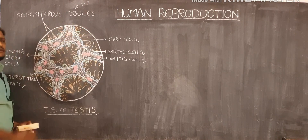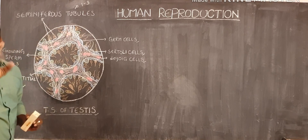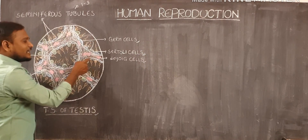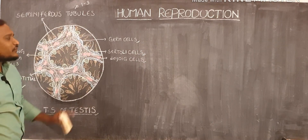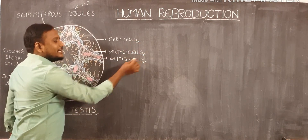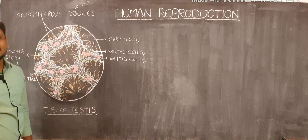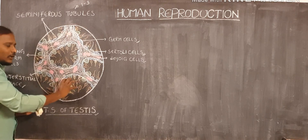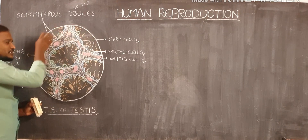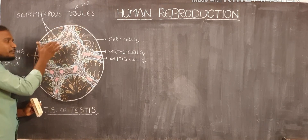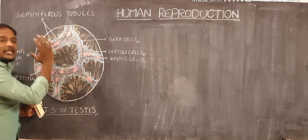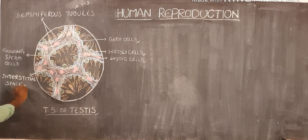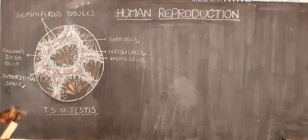Observe here. Seminiferous tubules are actually made up of two types of cells — germ cells and Sertoli cells are present in each seminiferous tubule. The seminiferous tubule consists of two types of cells, and Leydig cells are present outside of the seminiferous tubule. When you observe the TS of testes, the seminiferous tubules are present and there is also some empty space present. That empty space is called the interstitial space.